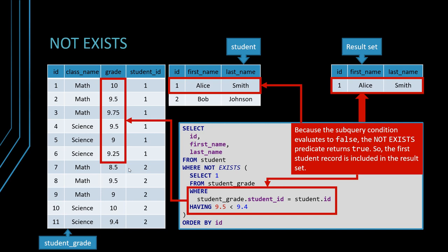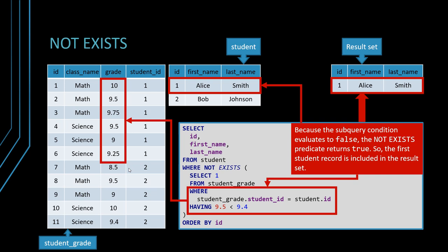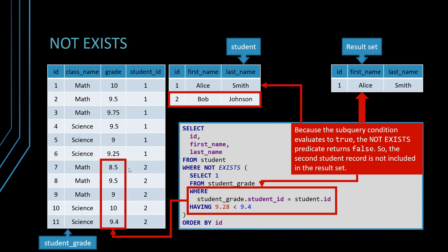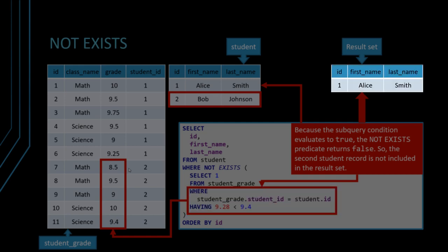So in this case we can see that the average grade for Alice is 9.5 meaning that she has a grade that's higher. So in this case Alice doesn't have this average grade that's lower but Bob has a lower average grade in which case he's not going to be included.